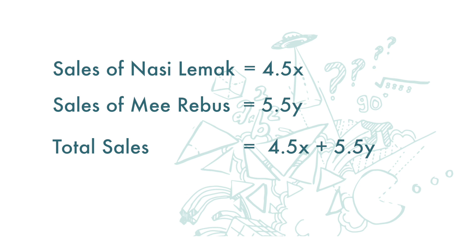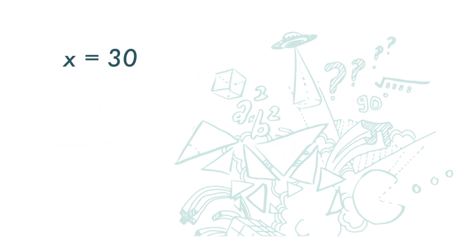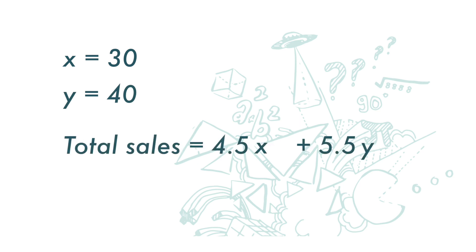Now this expression 4.5x plus 5.5y is called an algebraic expression. If you have sold 30 plates of nasi lemak and 40 plates of mee rebus today, then x is 30 and y is 40, and we can calculate today's total sales.